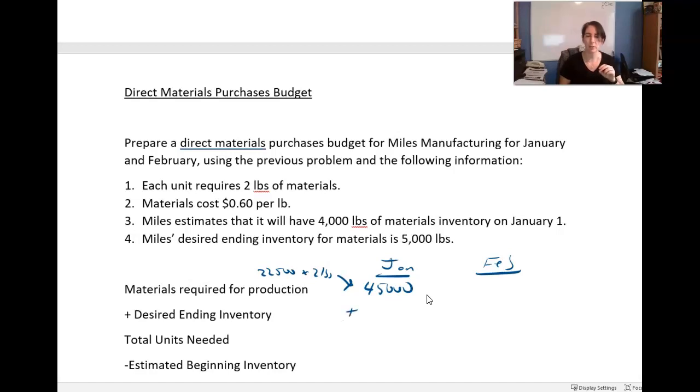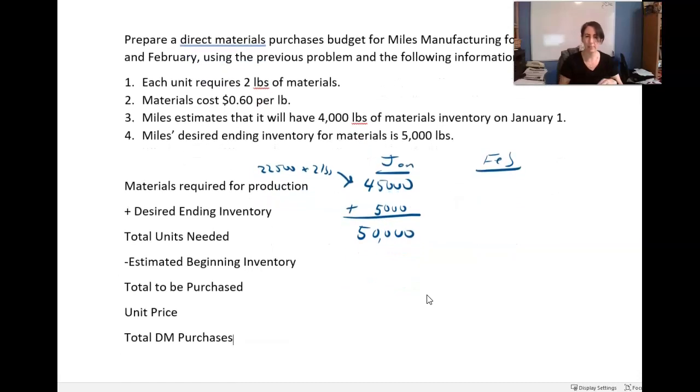Okay, so now is when it starts to look a little similar. Plus the desired ending inventory, right? I want to keep some inventory on my shelves. So it says that I'll have 4,000 pounds on January 1st. My desired ending inventory for materials is 5,000 pounds. The idea is I never want to have empty shelves. So I want to have some materials left over. So in total I need 50,000 pounds of material minus my estimated beginning inventory, right? Because I came in in January with something. It says we came in in January with 4,000 pounds of materials already on my shelves. So we're going to subtract that. Which means I have to have 46,000 pounds of materials purchased for the month of January. Now 46,000 pounds, they tell me the unit price is 60 cents per pound. So in January I need to spend $27,600 on direct materials.